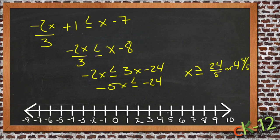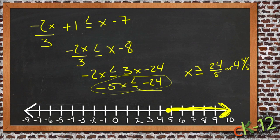So we find 4 and 4 fifths. We mark it on our graph. It says it could be that or anything bigger. So we mark it and then shade off to the right. So again, just like it would be for an equation, the only difference being this one step where we divide by a negative means that we have to switch the sign to go the other direction.